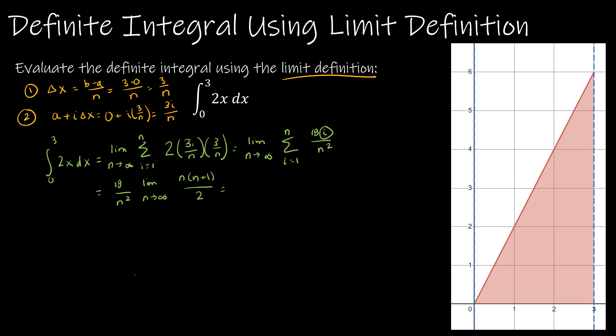I'm going to get rid of that summation and replace i with n times n plus 1 over 2. So I've gotten rid of the summation, and now I bring that 18 over n squared back in. This essentially is n squared plus n, and I have 18 times — this turns into 9 — so 9 times n squared over n squared, which is 9, and then 9 times n over n squared, which is 9 over n. Finding the limit gives me 9 plus 0, or 9.